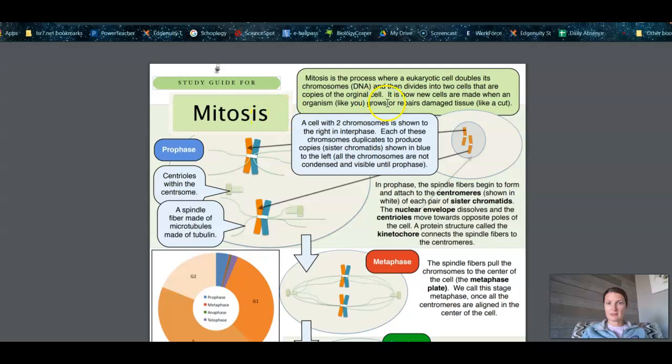Mitosis is cell division, a process where a eukaryotic cell doubles its chromosomes and then divides into two cells that are copies of that original cell. Two cells are made when an organism like you grows or repairs damaged tissue like a cut.